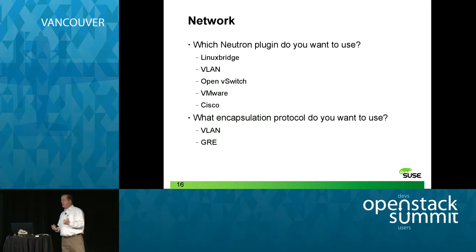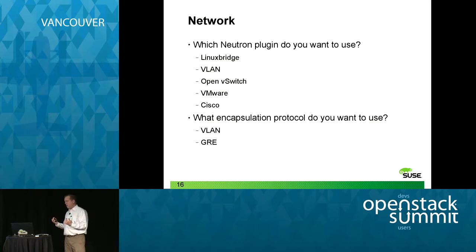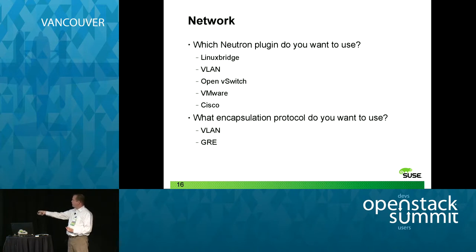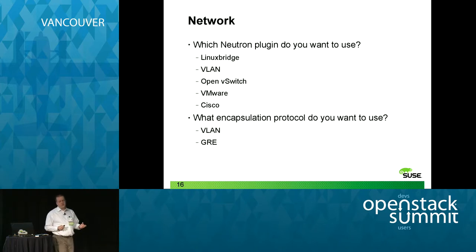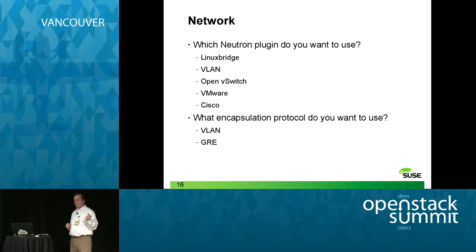What Neutron plugin do you want to use? This will impact your hardware interoperability. If you're going to use VMware, you have to use the VMware plugin to be supported by VMware. And you need to use VLAN encapsulation, not GRE, because vSphere does not understand GRE — and you will not be able to communicate effectively, or at all, with your VMware hosts.